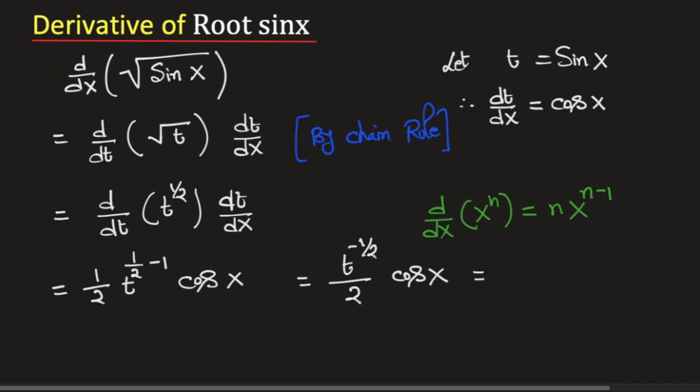If we write this in the denominator we will get 1 over 2 times t to the power half times cosine x.